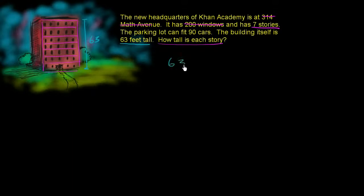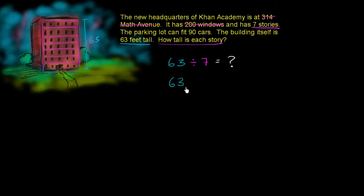So let's do that. We're going to divide 63 feet by seven stories, and this is going to tell us how tall each story is — equal to question mark. Now, 63 divided by seven being equal to question mark is another way of saying that seven times question mark is going to be equal to 63.